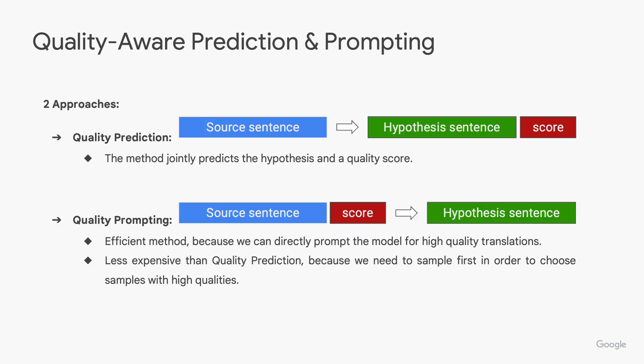We propose two approaches for our quality-aware translation model: quality prediction and quality prompting. For quality prediction, the model is trained to predict both the translation and its quality score simultaneously. During training, we label each training example with a quality score, and the model learns to predict this quality score along with the translation. This method significantly enhances efficiency by streamlining the translation process and eliminating the need for a separate quality estimation step — essentially, the model becomes self-aware of the quality of its translations.